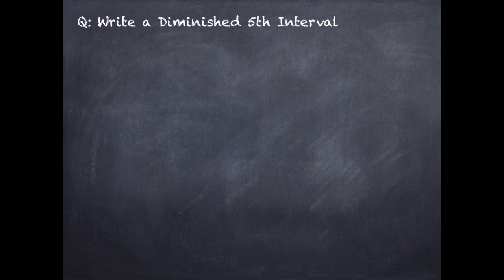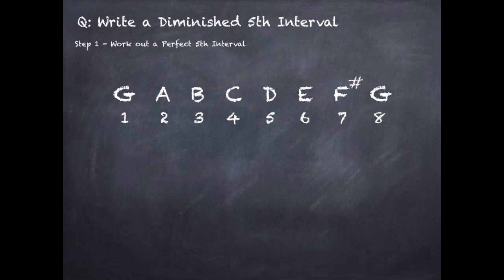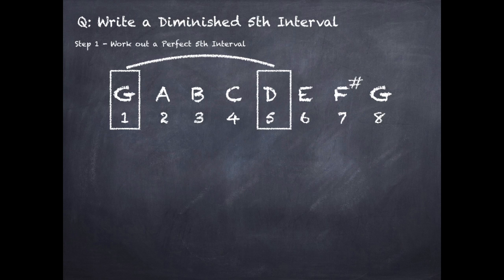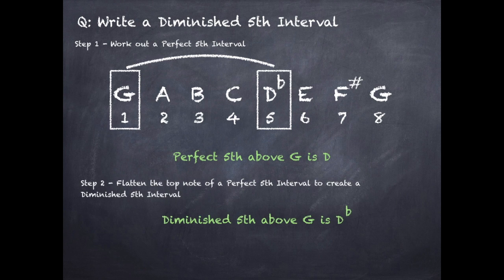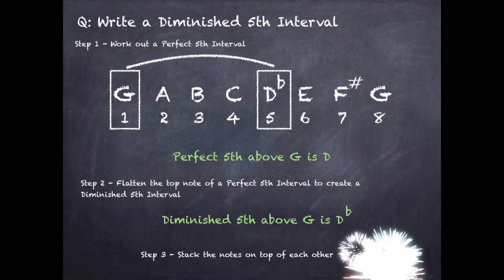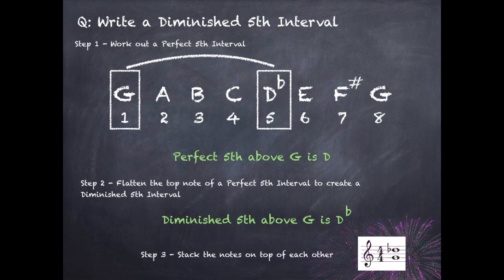To write a diminished fifth interval, step 1: work out a perfect fifth interval. We go from the first note of our G major scale, which is G, to the fifth note, which is D — perfect fifth interval is G to D. Step 2: create a diminished fifth by flattening the top note, so D becomes D flat — diminished fifth is G to D flat. Step 3: stack the notes on the stave. It's a three-step process.